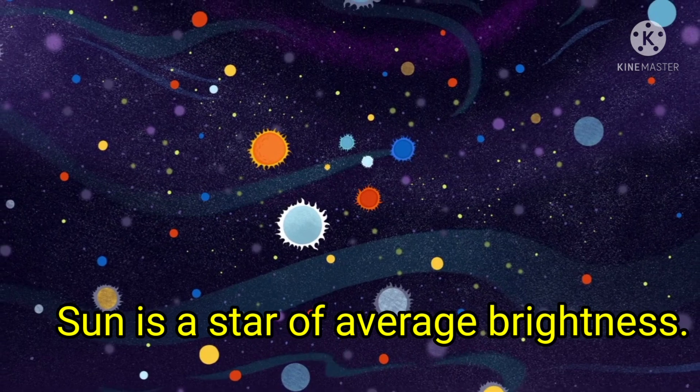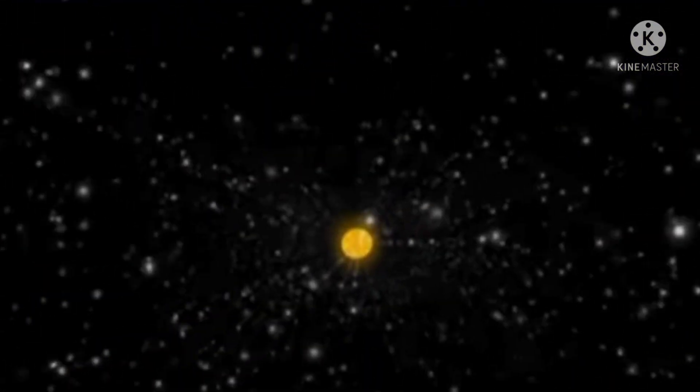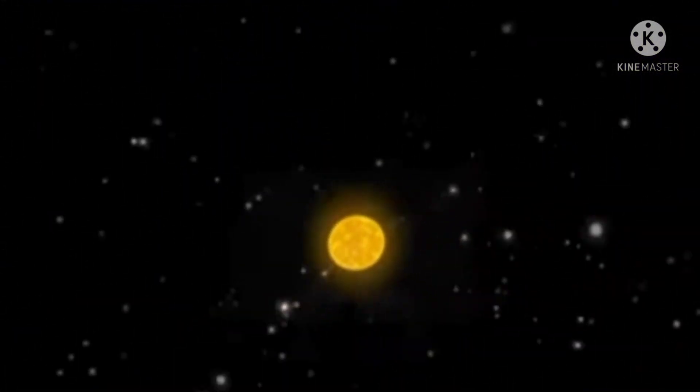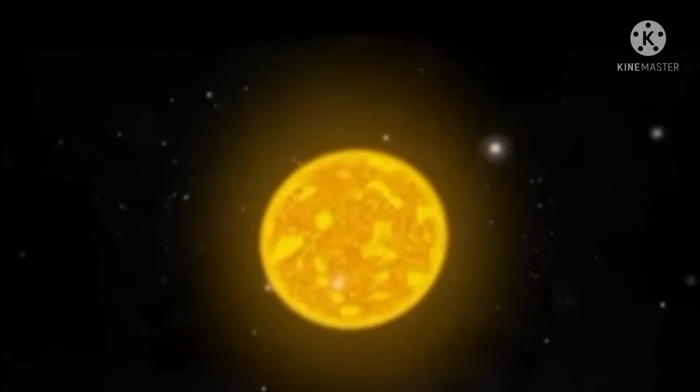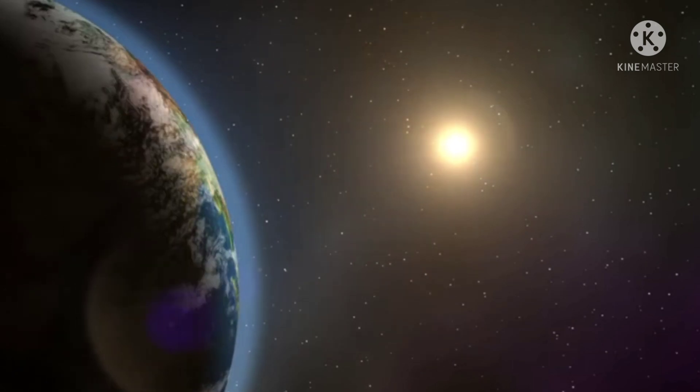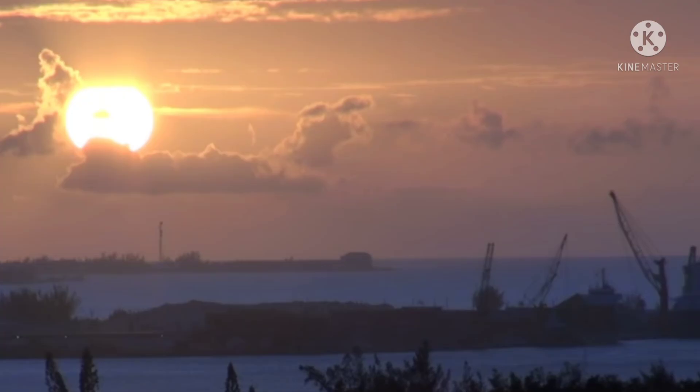Almost all the stars are millions of times farther away from us as compared to the distance of the sun from us. It is for this reason that the sun appears like a ball to us, but the other stars appear only as points or dots. Stars appear as dim points in the night sky. This is due to their very large distance from us.